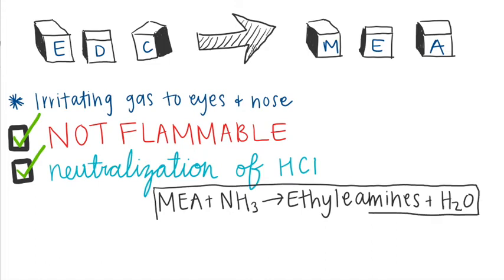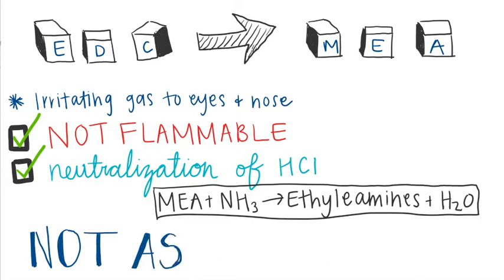So hydrogen chloride doesn't have to be neutralized later, which reduces the overall reaction process. The new, less hazardous process reacts MEA and ammonia, producing ethylamines and water, which are not as hazardous as the other products.